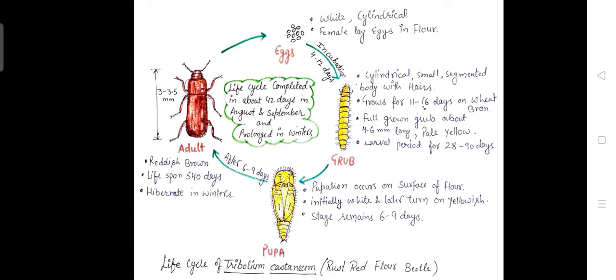A cylindrical, small, segmented larva comes out, which is known as grub. The larva has hair on its body. These larvae grow for 11 to 16 days on wheat bran. The fully grown grub is 4.6 mm long and its color is pale yellow.